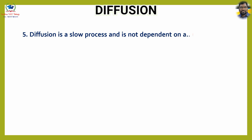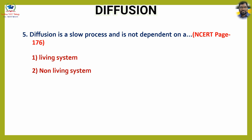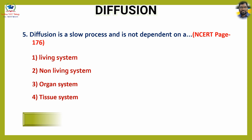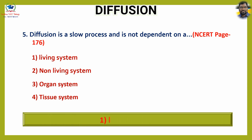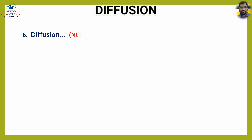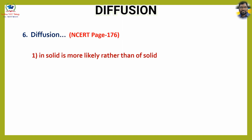Question number five: Diffusion is a slow process and is not dependent on a — options: one, living system; two, non-living system; three, organ system; four, tissue system. The answer is option one, living system.